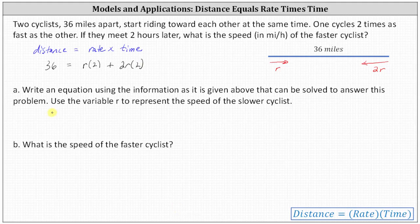So for part A, let's write the equation as 36 equals 2R plus 4R. The homework system does not want us to simplify any further for part A. Be sure to leave the equation in this form here.